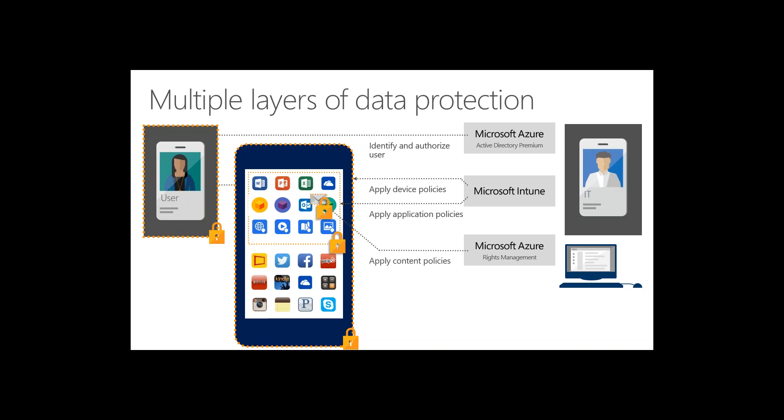The third area is controlling our data. Data has traditionally resided on a file server locked down by IT policy. But users are sending documents outside the organization via email attachments, file sharing, Dropbox, or USB drives, meaning permissions generally don't travel with the document. If someone accidentally sends a confidential document to the wrong distribution list, there is nothing to protect that document.